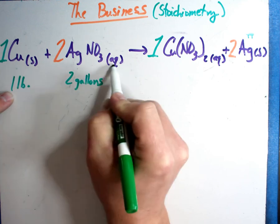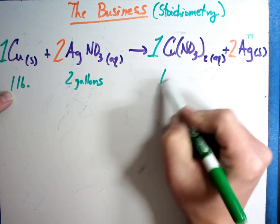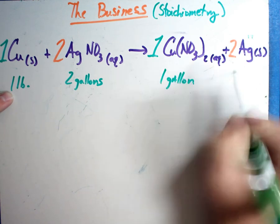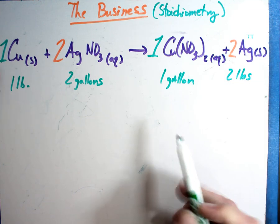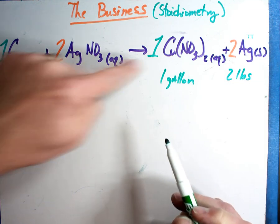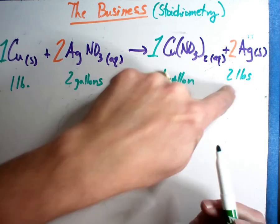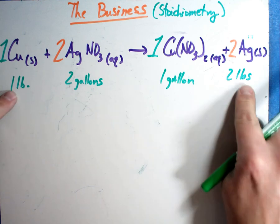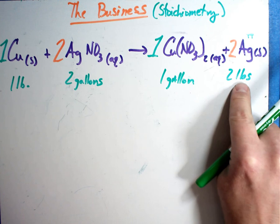Why two gallons? Because it's aqueous. When we mix them together, we should get one gallon of this, and two pounds of this. Now, notice, the recipe says one of these with two of these gives me one of those and two of those, and that's what we've done. One pound, two gallons. We get one gallon and two pounds. Great ratio. I put in one pound of cheap copper, and I get two pounds of very expensive silver.